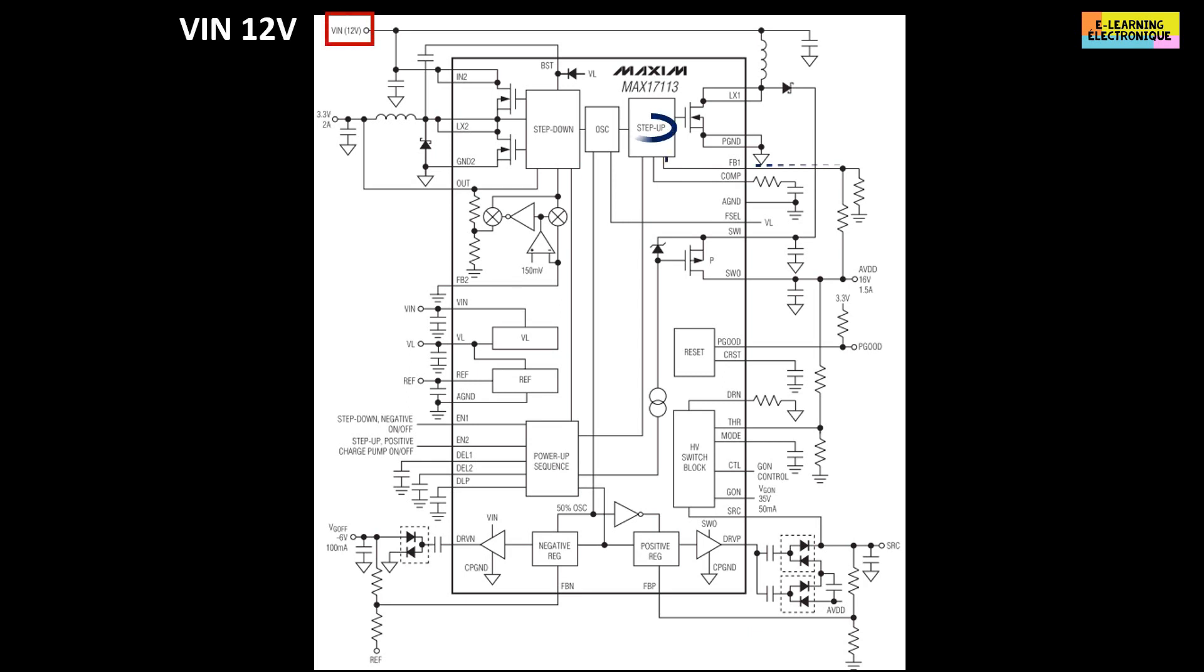Some circuits allow to increase the input voltage to 16 volts, this is the voltage named AVDD. Other circuits lower the input voltage to 3.3 volts, which is the voltage named VDD, also known as V-Logic.